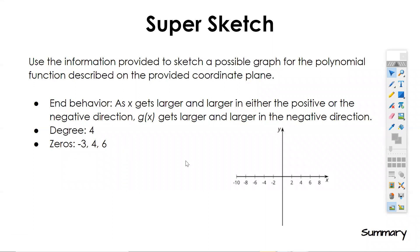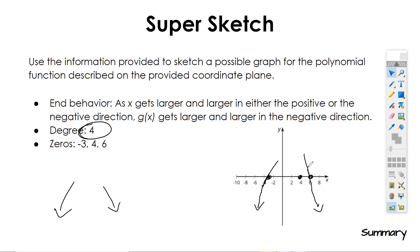We've got zeros at negative three, four, and six — so we plot those first. The end behavior tells me that as x gets larger in either direction, y gets larger in the negative direction — meaning it's pointing down for both ends. Remember, the degree is four. They didn't tell us which one bounces and which one crosses. I've got to finish with this going down and this going down, and it's got to have an exponent of four. So we can't just have it cross and go back up — it's got to have a bounce in the middle.